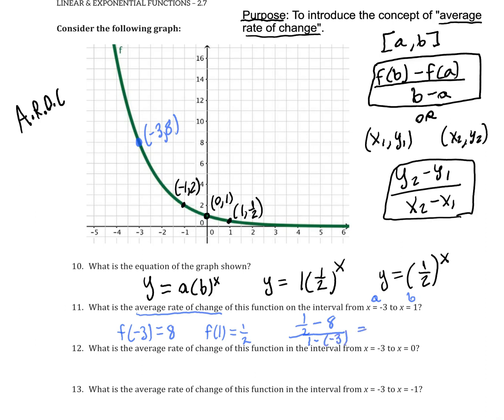And so 1/2 minus 8, or 0.5 minus 8, is -7.5. And -7.5 divided by 1 minus -3 is the same as 1 plus 3, which is 4. So if I round that to the nearest thousandth, I'm going to get -1.875, and that's not actually rounded, that's an exact value.